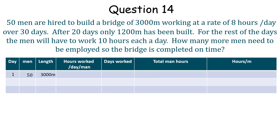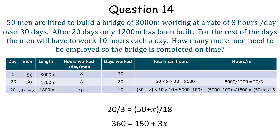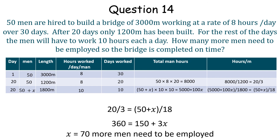On day 1, 50 men are needed to build a bridge of 3,000 metres, working 8 hours a day over 30 days. They start working, but at day 20, they realise that the 50 men have only completed 1,200 metres, working 8 hours a day each. The 50 men have worked a total of 8,000 hours over the 20 days, which works out at 6.7 hours per metre. More men are needed. We can call the additional men x and add to the original 50 men. These men need to complete the remaining 1,800 metres of bridge in the remaining 10 days, working 10 hours a day. The total man hours now works out at 5,000 plus 100x, which is 50 plus x divided by 18 hours per metre. We can equate the two scenarios, getting 20 over 3 equals 50 plus x divided by 18. Solving this, we get that an extra 70 men are employed to complete the bridge in time.